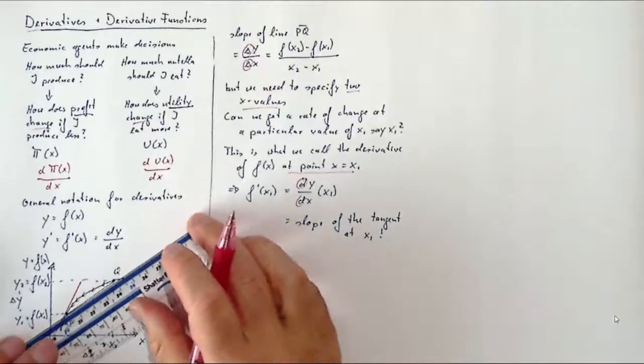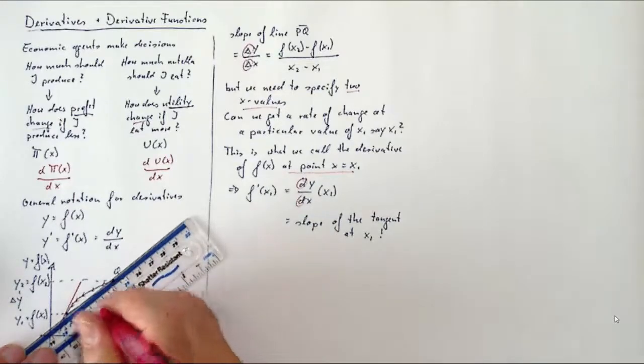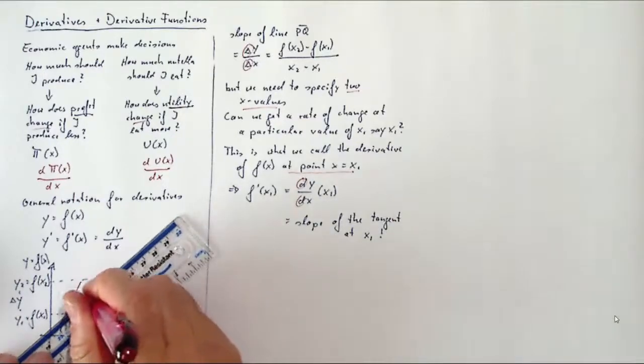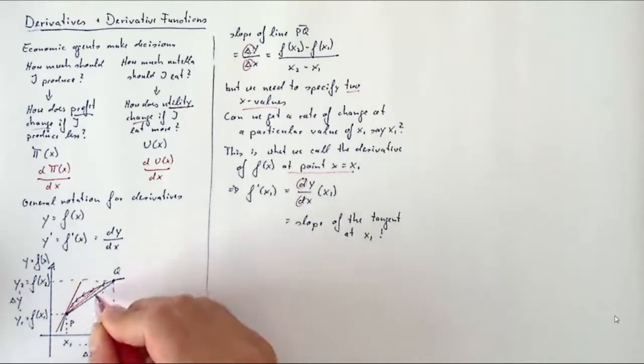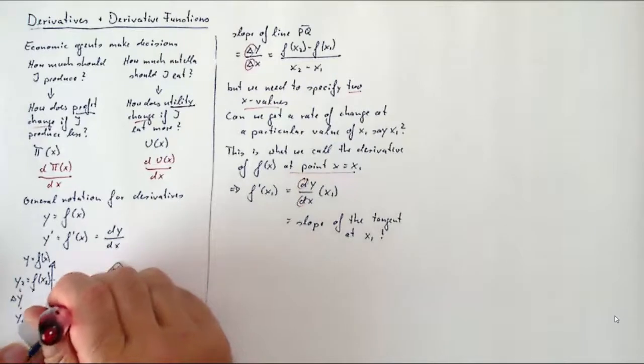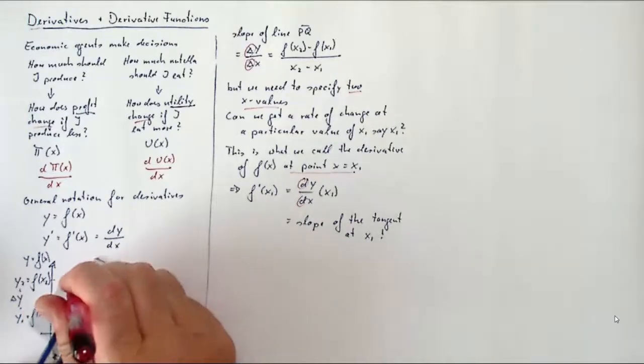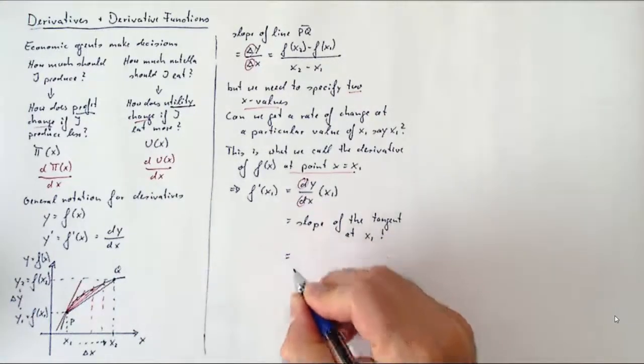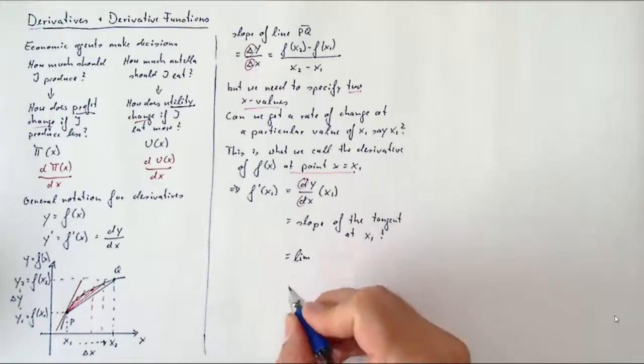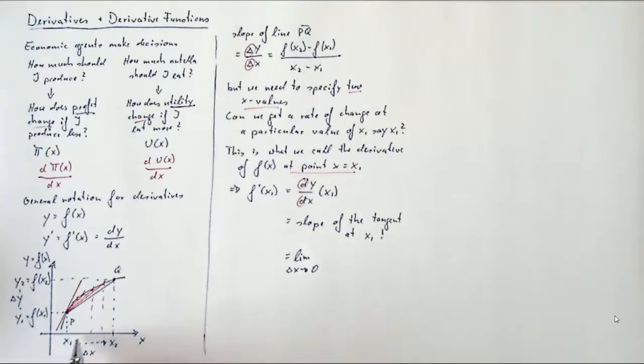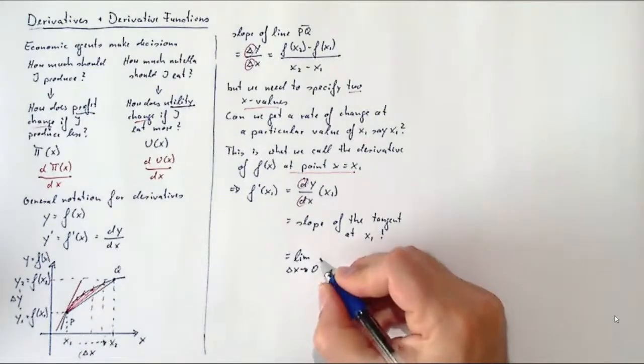If you think about moving from point Q ever closer to point P and looking at ever smaller secants—meaning secants that connect points that are ever closer together—we are moving that point x₂ ever closer to x₁, or the point on the function Q ever closer to P. The secants will get ever closer, and eventually if Q merges onto P, we will get to the tangent. So mathematically, what we've been doing is we've been decreasing Δx down to zero.